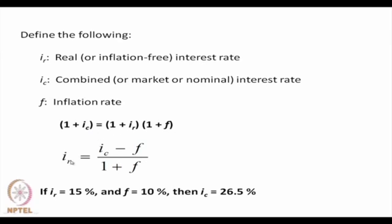It is also possible to work with the inflation-free or real rate of interest. If we define IC as the combined or market or nominal rate of interest, IR as the real rate of interest, and F as the inflation rate, then the relationship is: (1 + IR)(1 + F) = (1 + IC). Therefore IR = (IC − F) / (1 + F). So if the real rate of interest is 15% and F is 10%, then the combined interest rate is 26.5%.